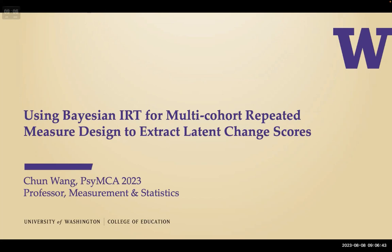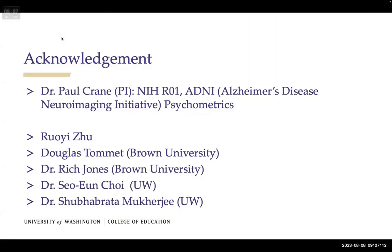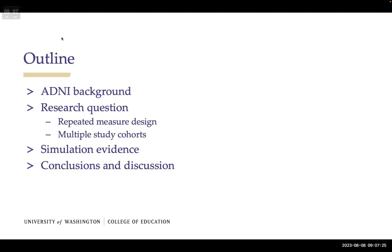This is actually my first time attending this conference and talking to an audience that is mostly non-psychometricians, so I'm trying to make this talk as accessible as possible. The title of the presentation is 'Using Bayesian IRT for Multi-Cohort Repeated Measure Design to Extract Latent Change Scores.' I want to acknowledge Paul, the PI on the project, as well as my grad student Roy Ju, and collaborators Doug, Rich, Susan, and Joey.